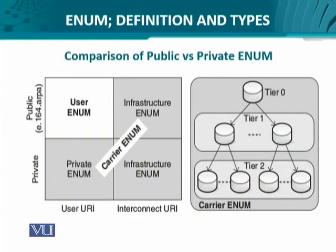Let's look at this diagram, which is again from Tony Janewski. On the left hand side we have a figure in four quadrants. Three of these quadrants — including the private NIM, the infrastructure NIM for user uniform resource identifiers (URLs), and the interconnect or carrier/ISP URIs — are under the jurisdiction of the carrier NIM. As for the user NIM, it is public data and is always suffixed with a telephone number written in reverse order ending with e164.arpa.